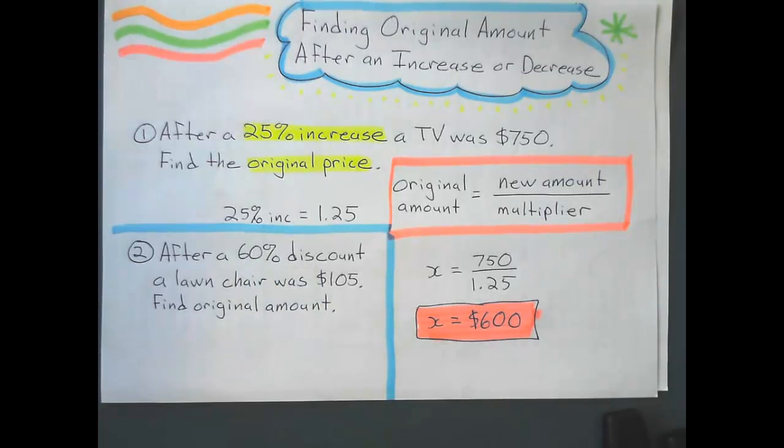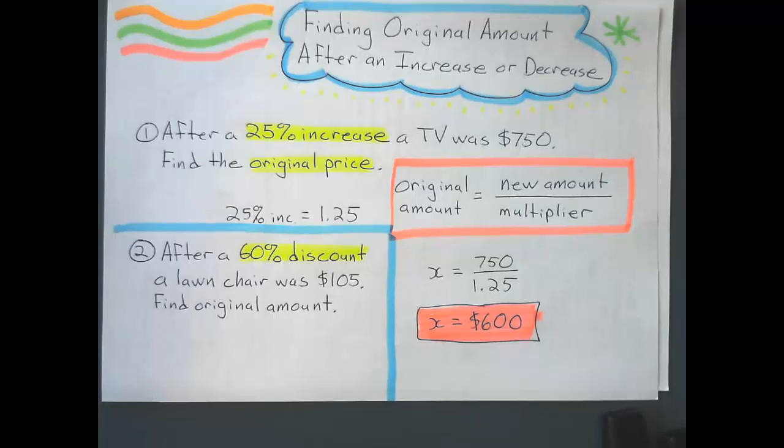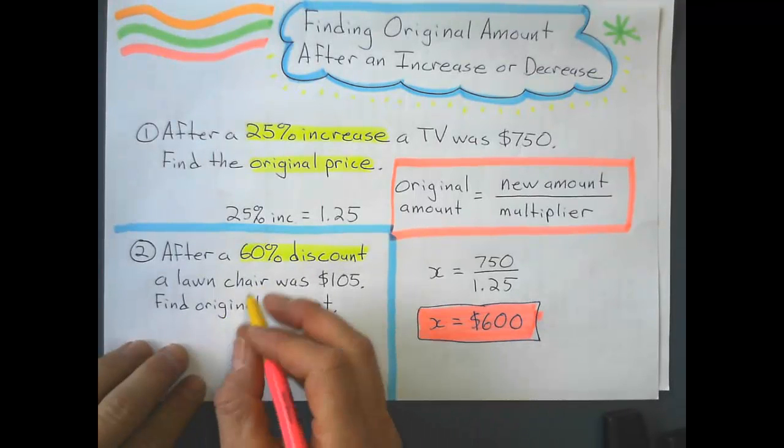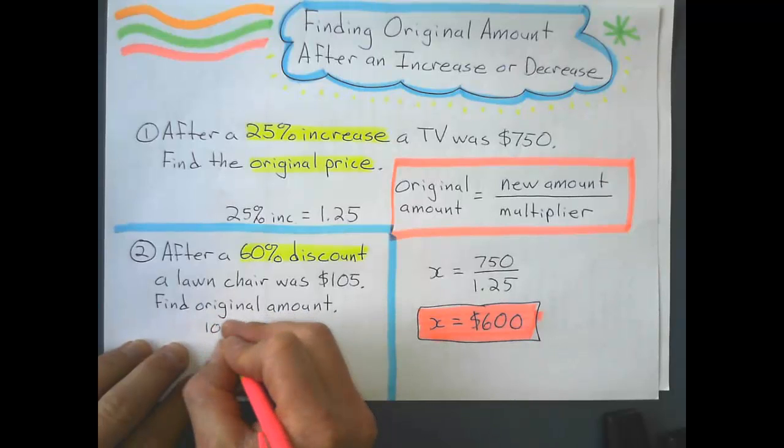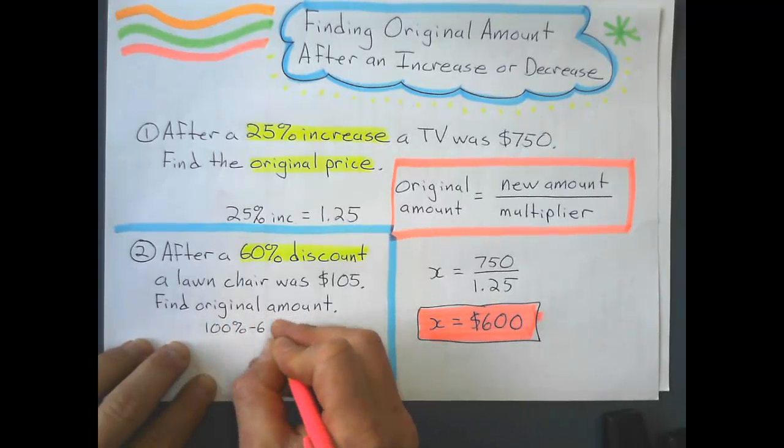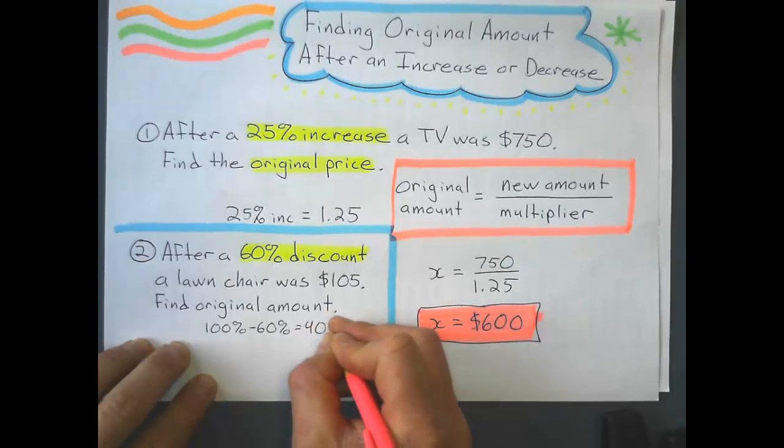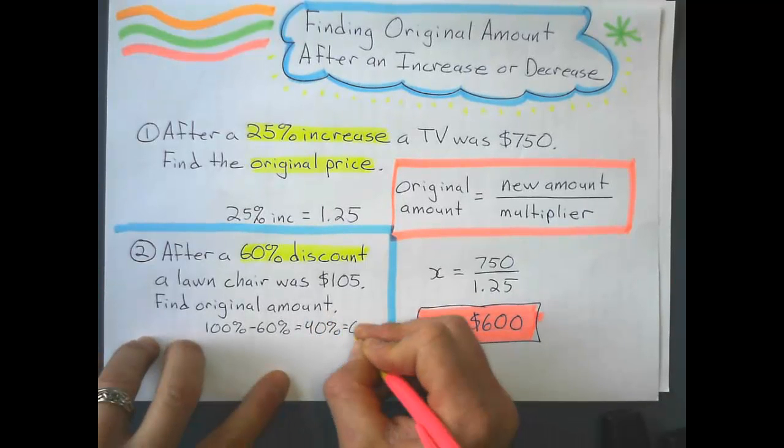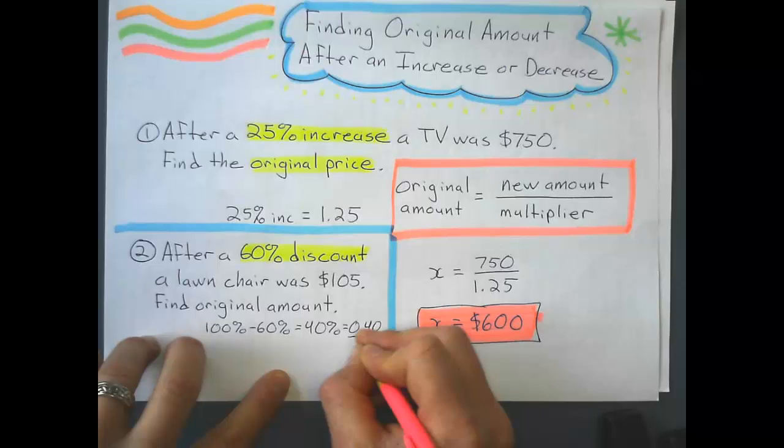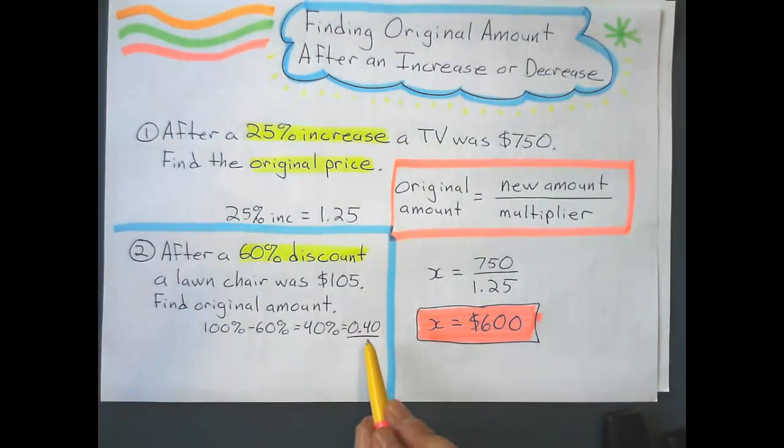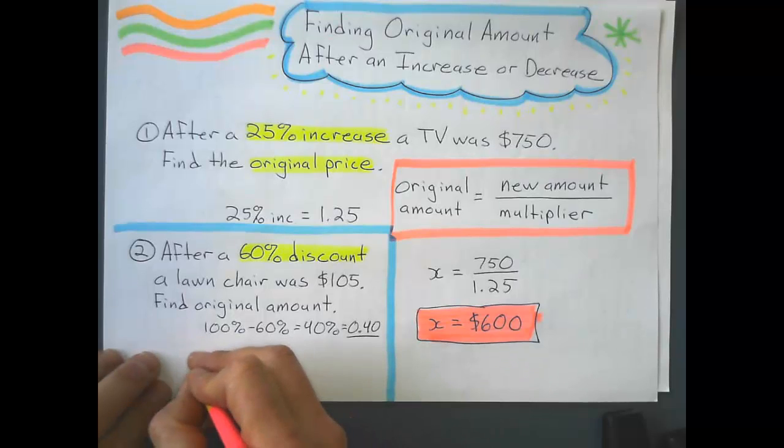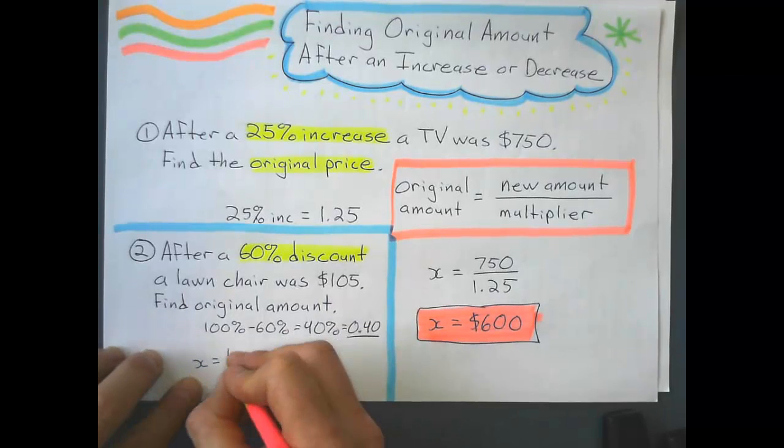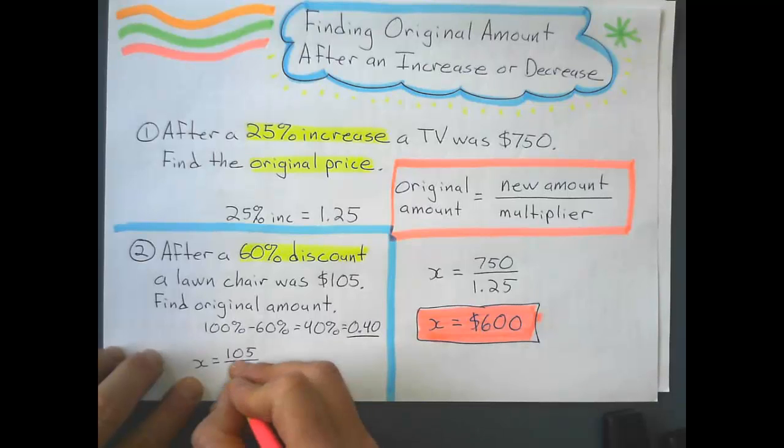And remember, a 60% discount represents a 60% decrease. And remember what that is. That's 100% minus 60%, which is 40%, which is 0.40 or just 0.4. That represents my multiplier. So the original amount is just going to be the new amount, $105, divided by 0.4.